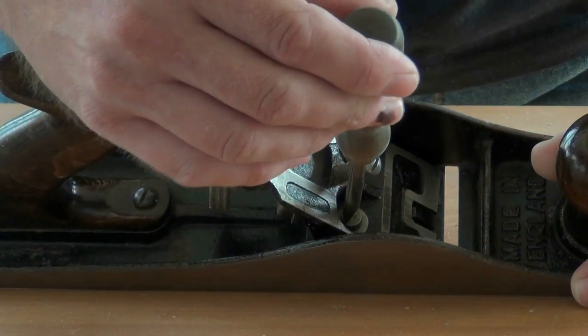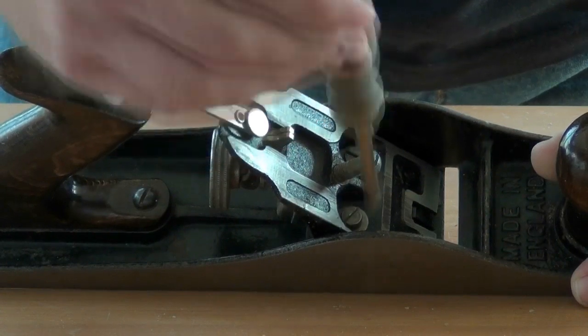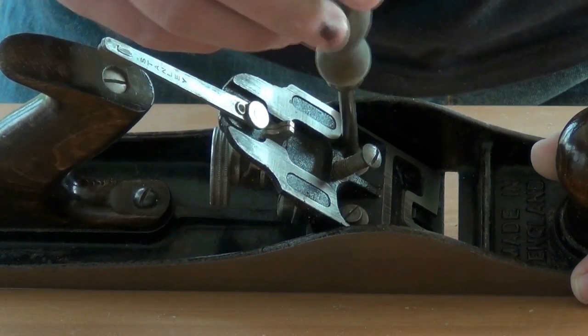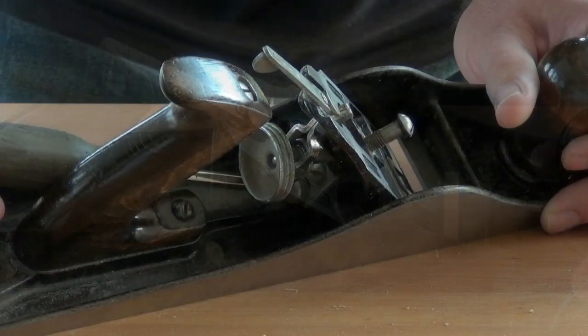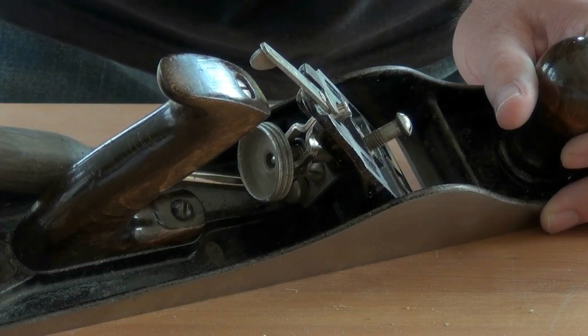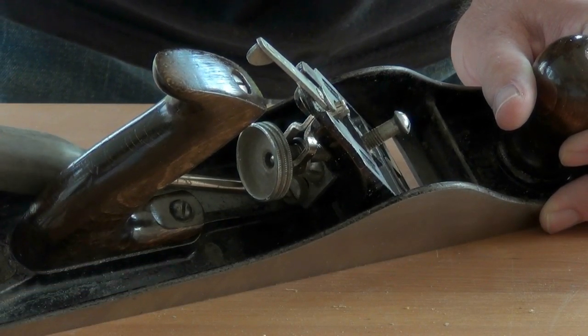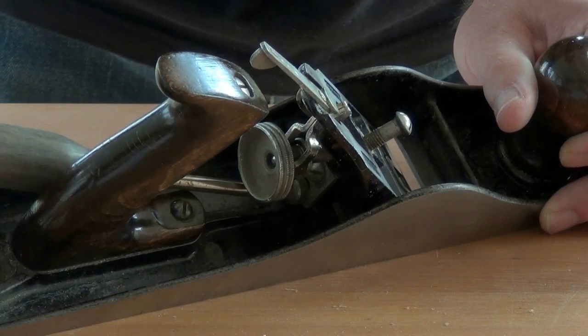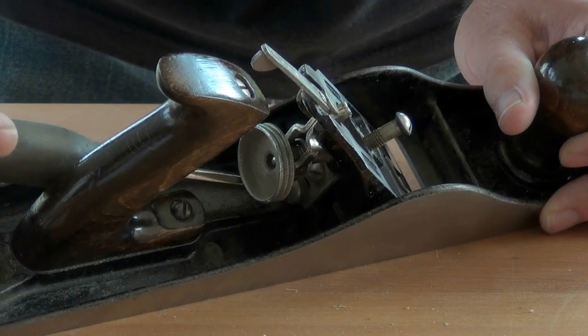I'm attaching the frog but not fully tightening these two machine screws that hold it down. Now by turning this machine screw at the back of the frog assembly, I can move the frog forwards or backwards in the body of the plane.